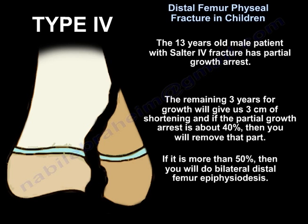A 13-year-old male patient with a Salter 4 fracture has partial growth arrest. The remaining 3 years of growth will give 3 centimeters of shortening. If the partial growth arrest is about 40%, you remove that part. If it is more than 50%, you will do bilateral distal femur epiphysiodesis.